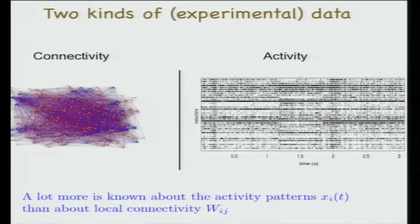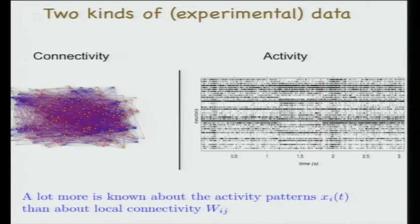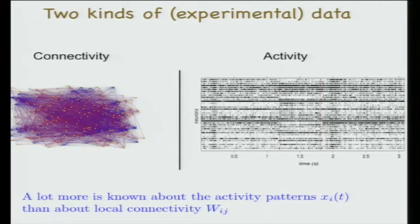More is known about activity than connectivity. Global connectivity—how different brain areas talk to each other—is known, but local connectivity inside each brain area is very difficult to capture. Activity can be recorded by sticking electrodes in and measuring it, or on a more global level using fMRI approaches, which is legal in humans.